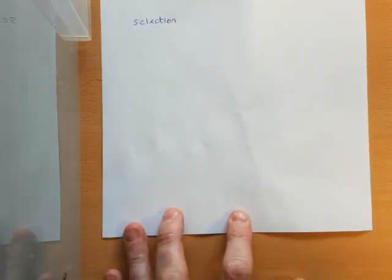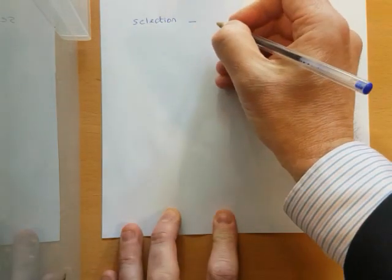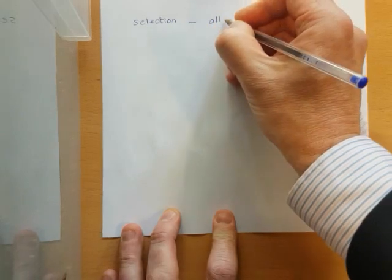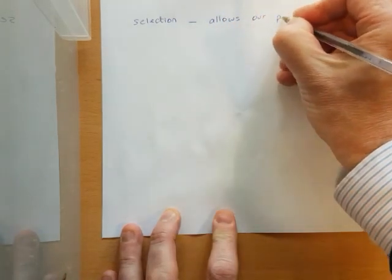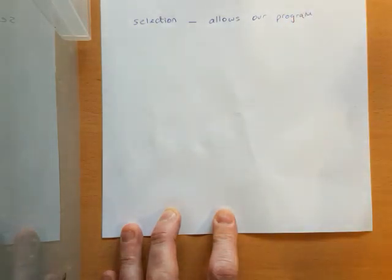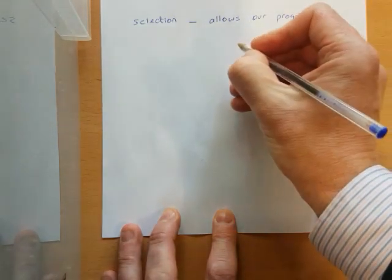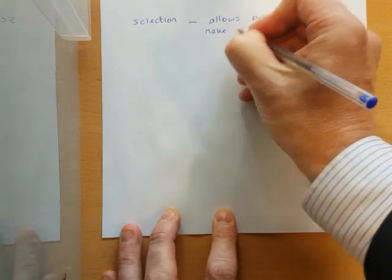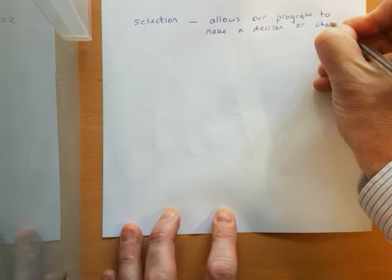Now we might need our program to make a decision or a choice. So for that we use selection, and selection is a way or something that allows a program, algorithm, problem, whatever, however you want to define what you're doing, to make a decision or choice.